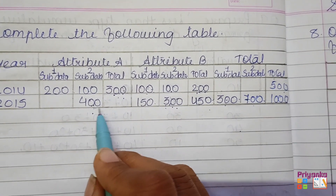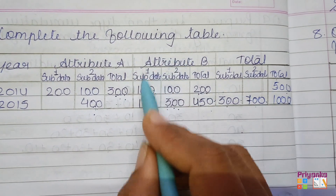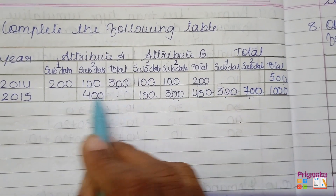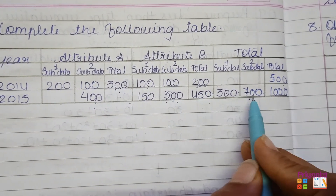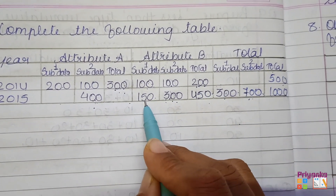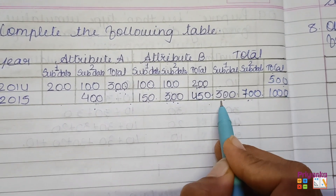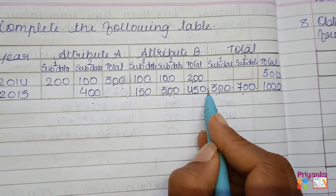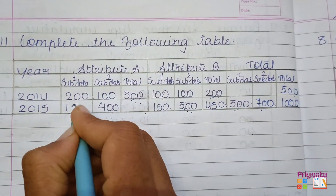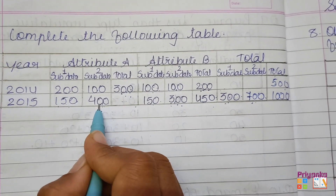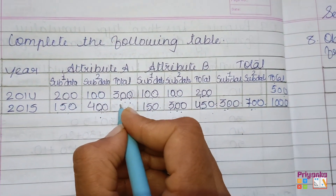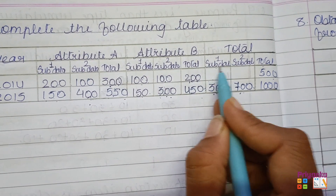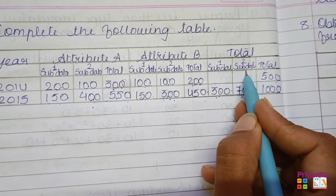We still need the information for attribute A in this row. Attribute B information and the total are ready but attribute A is incomplete. Take the sub-data of attribute B and subtract from the total: 150 from 300 gives 150. So the value is 150, and now 150 plus 400 will be the total of attribute A, that is 550.